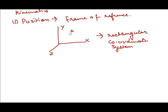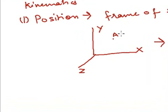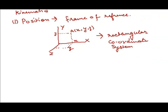Let A be the position of any point in rectangular coordinate system and it can be labelled as A(x, y, z). So, this position is x, here it is y and this is z.